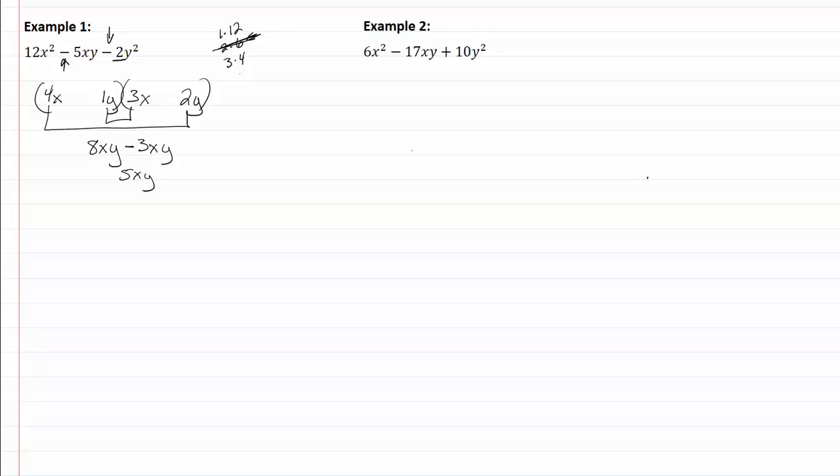Now my middle term here is a negative, so I want a negative 5xy. What I have right now gives me a positive, so that means I need to change my signs on those.